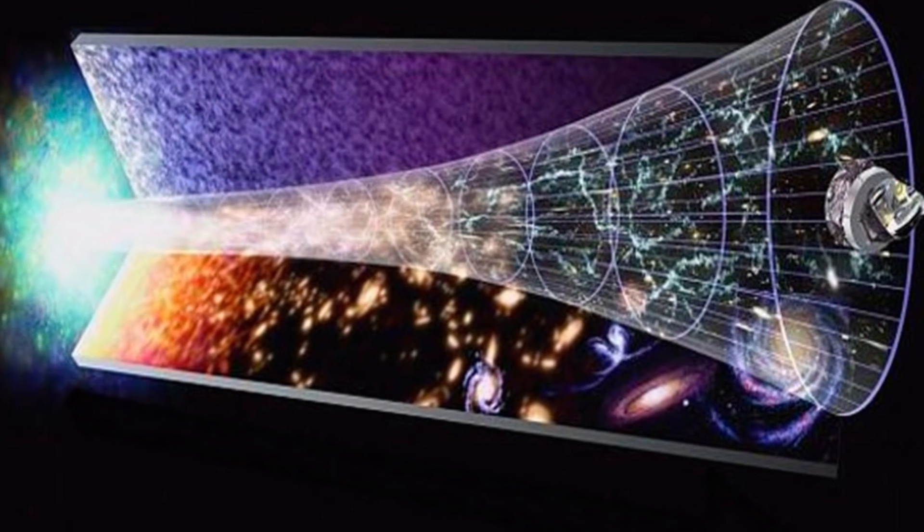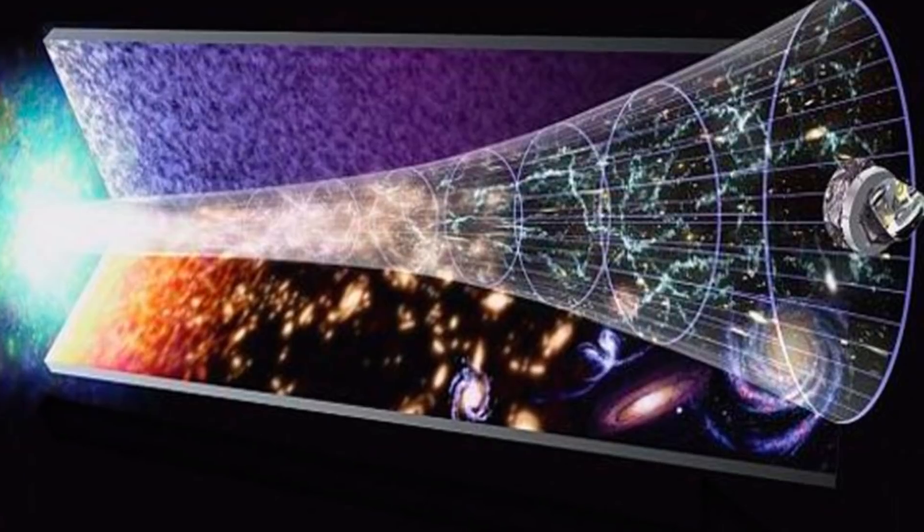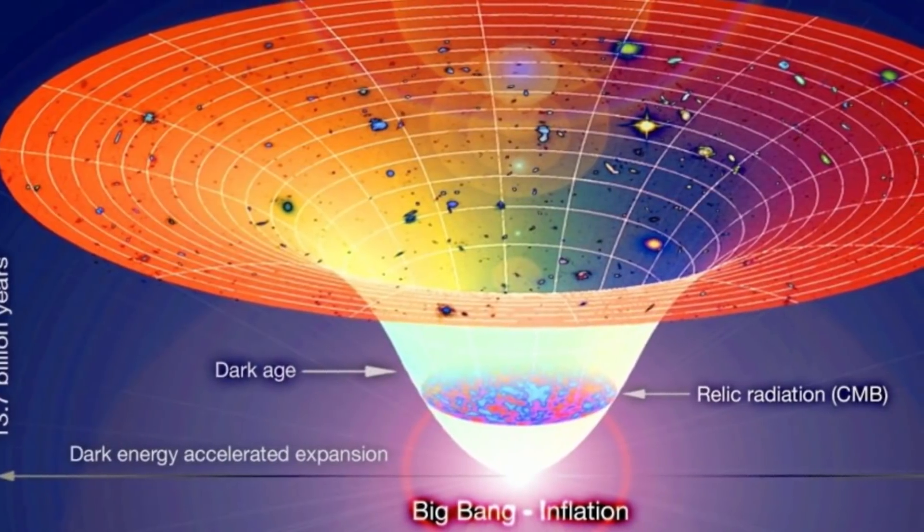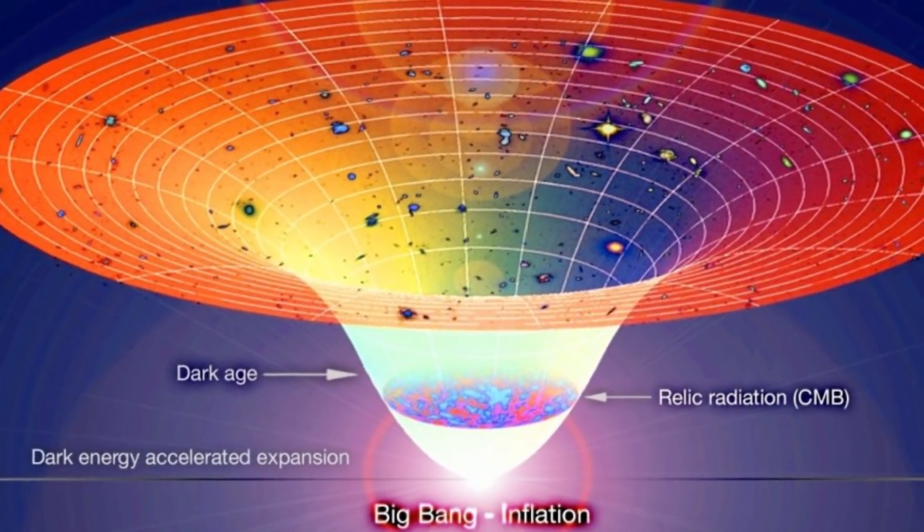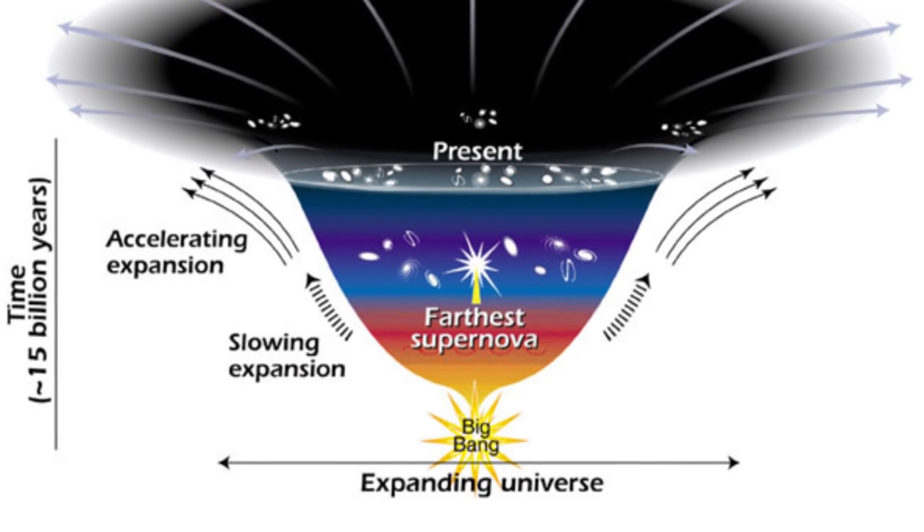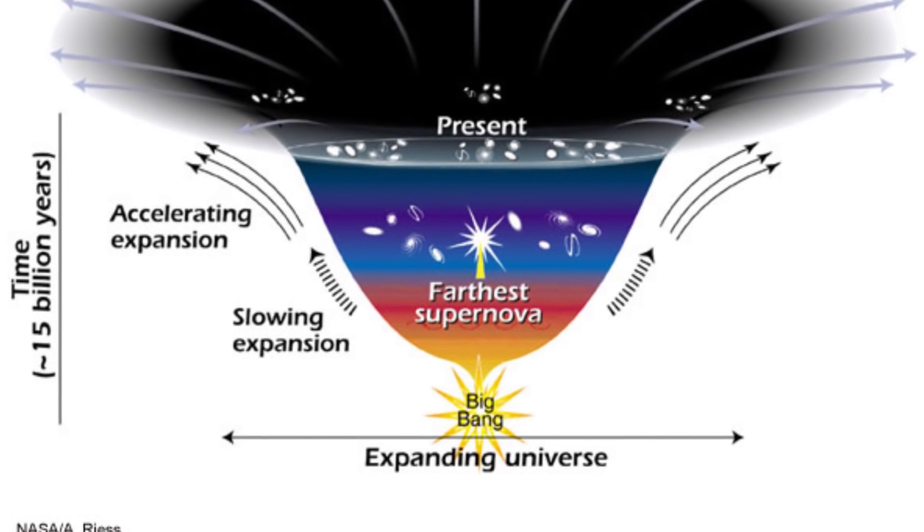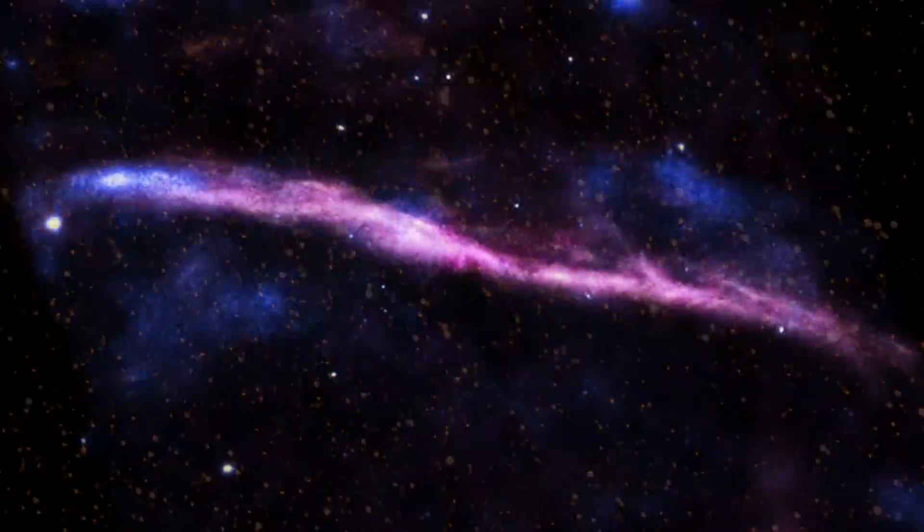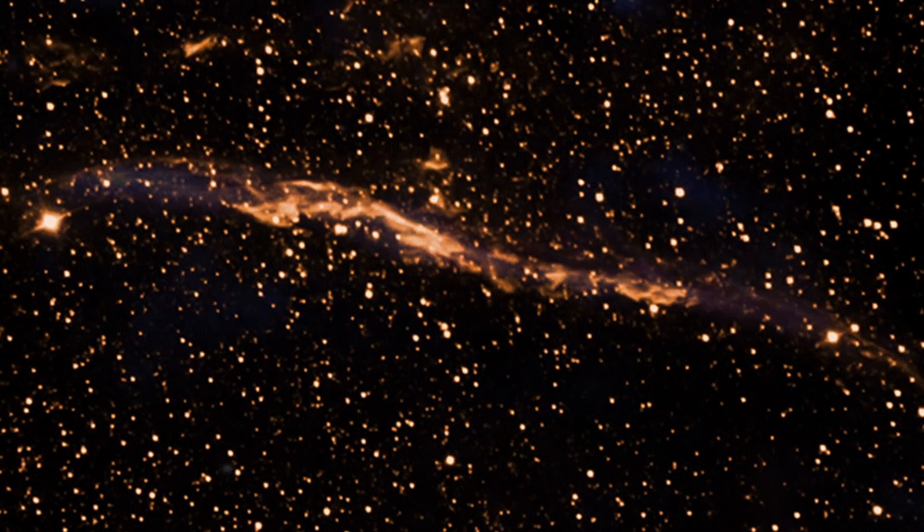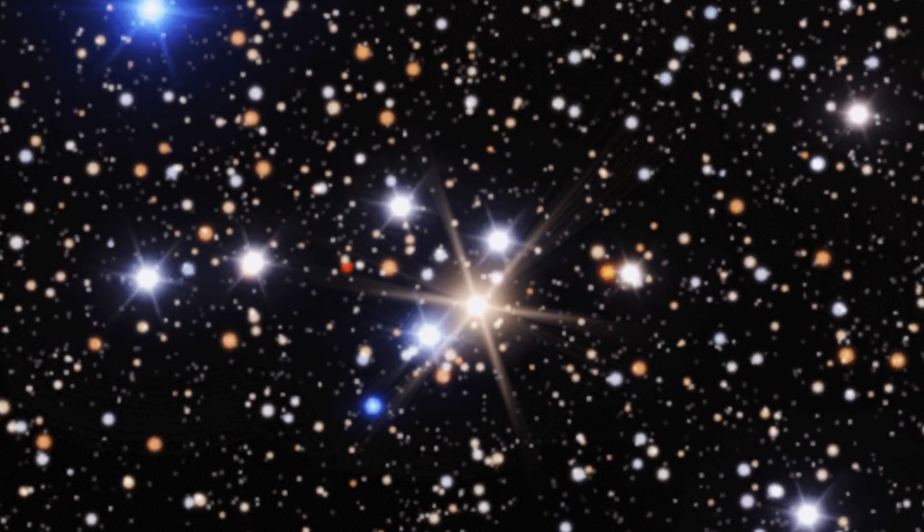To understand this, we should first go over the density parameter, which is represented with omega. This is used a good deal when determining the likely shape of the universe. The density parameter compares the average density of matter and energy in the universe to the density at which the universe would only stop expanding after an infinite time. If the average density is higher than the critical density, then the universe will eventually collapse back, and if it's lower, it will expand infinitely.